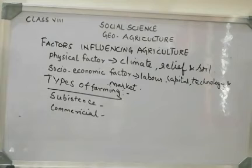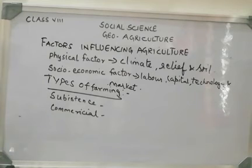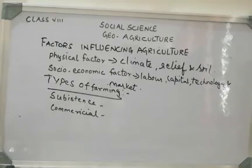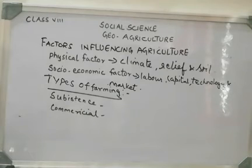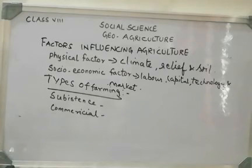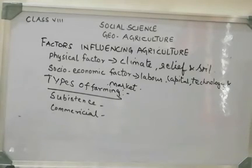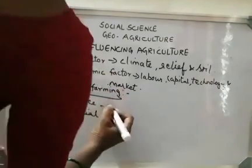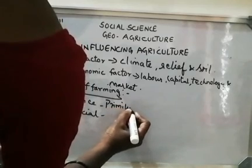When I say subsistence farming, the farmers grow crops mainly for their family's consumption only. The farm sizes are very small and they use primitive tools. Family members help with the farm and the farmer does not hire anybody to plow the field. Subsistence farming can further be classified into primitive subsistence farming and intensive subsistence farming, which I will teach in the next class.